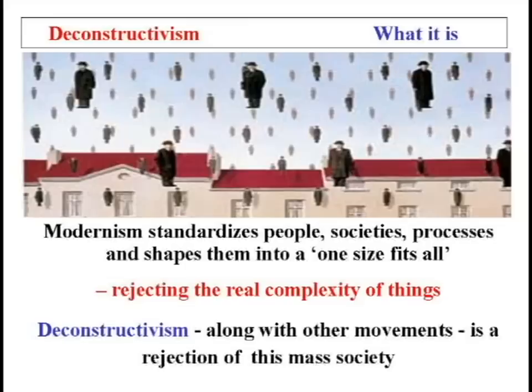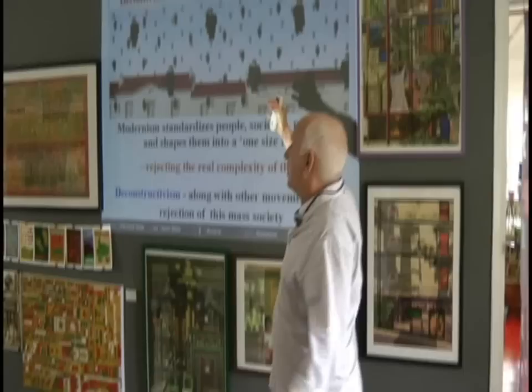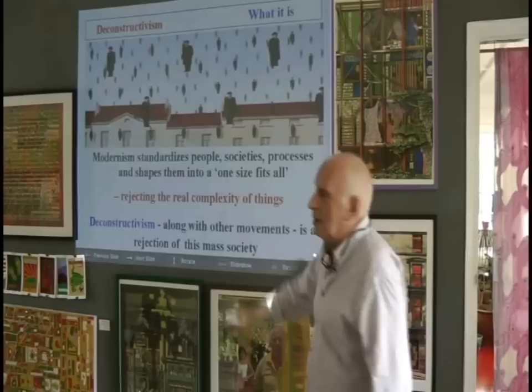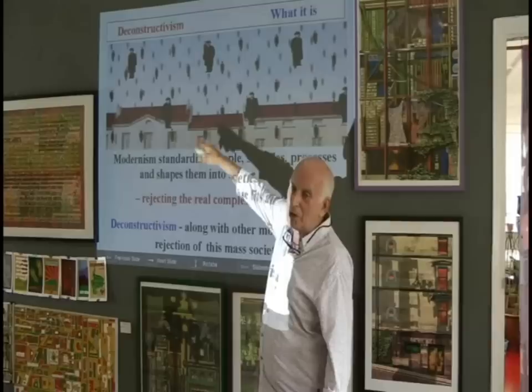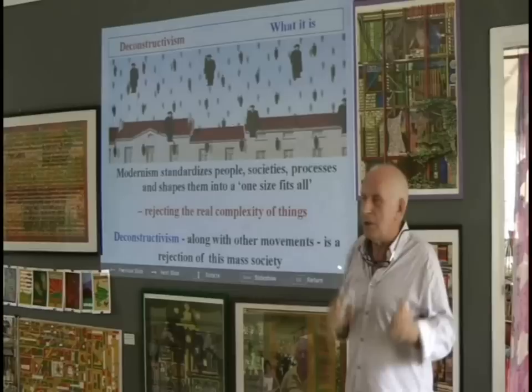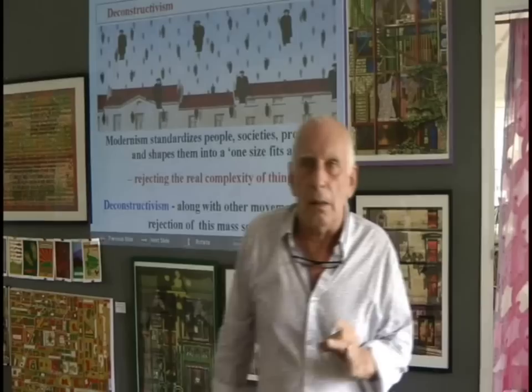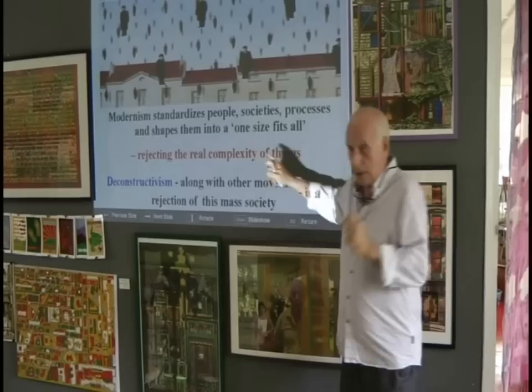This is a kind of joke. In order to produce a unified, complete, statistically worked out functionalist form, you end up functionalizing people's experience and, by implication, standardizing people. What we have here is René Magritte, the surrealist painter, with this joke of the world raining down standardized office workers. Modernism standardizes people in society and shapes them into a one-size-fits-all, where that one size is determined by functionalism and analysis. It rejects, in theory, the real complexity of things — not all people are different, not all problems are different, but a lot of them are.